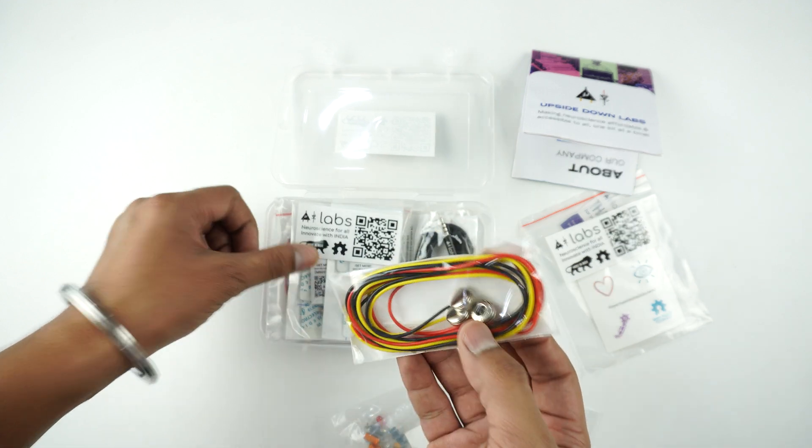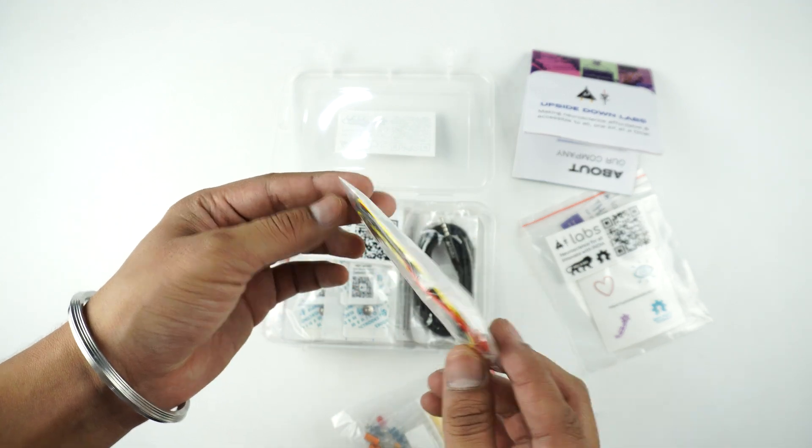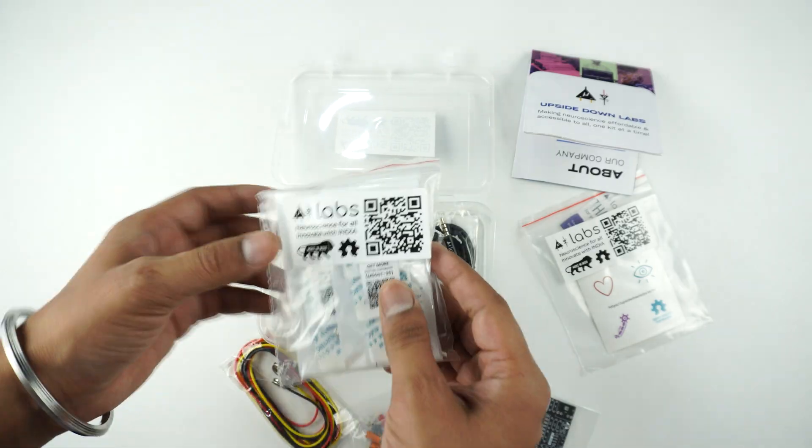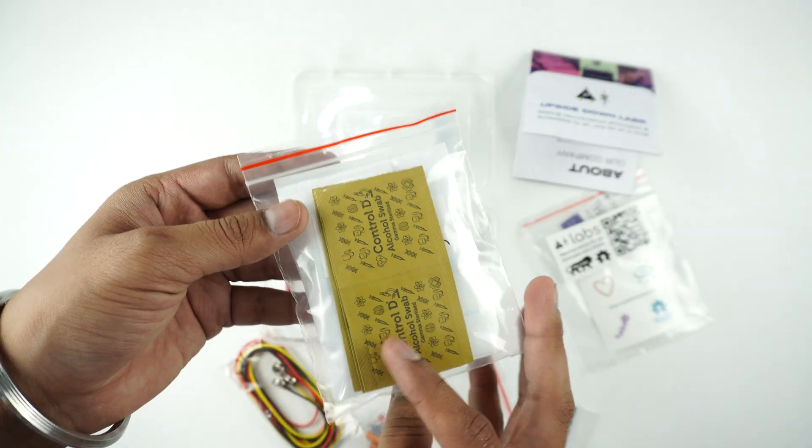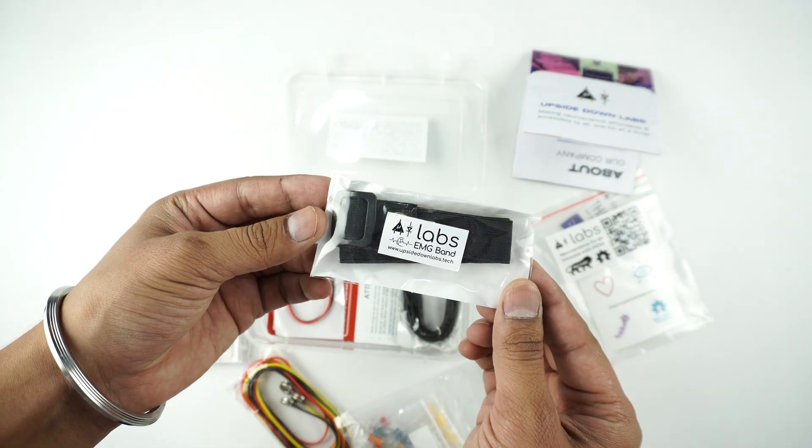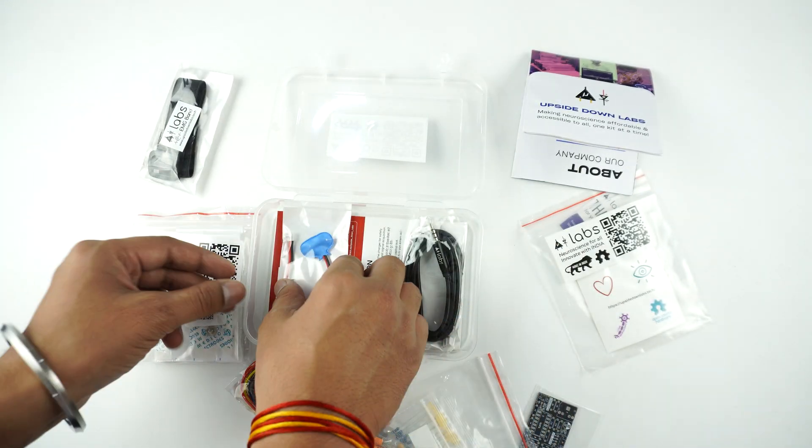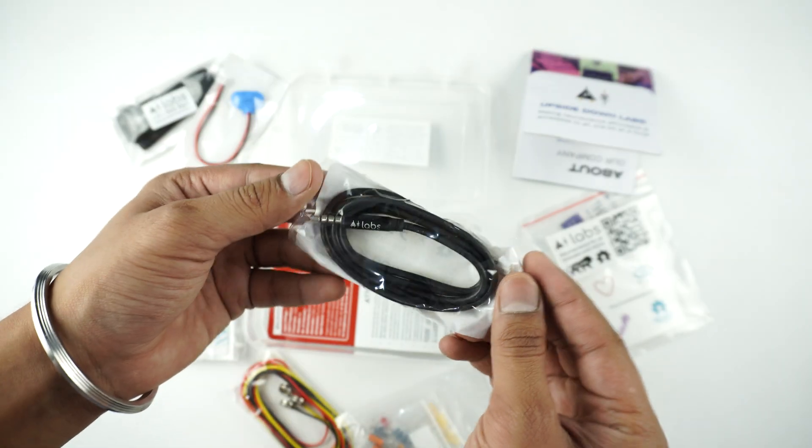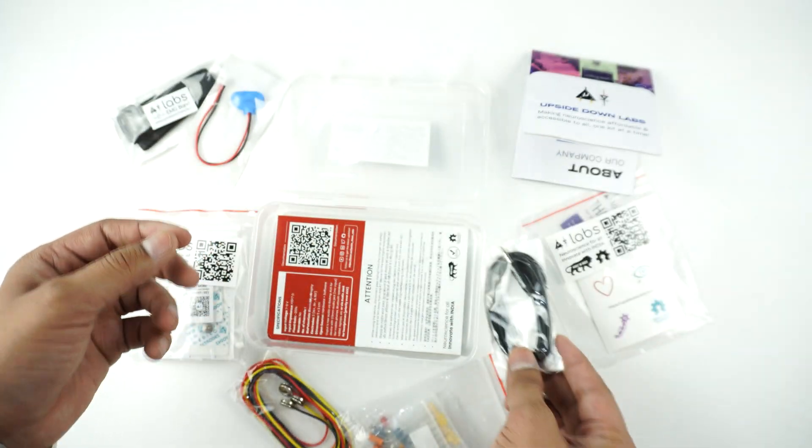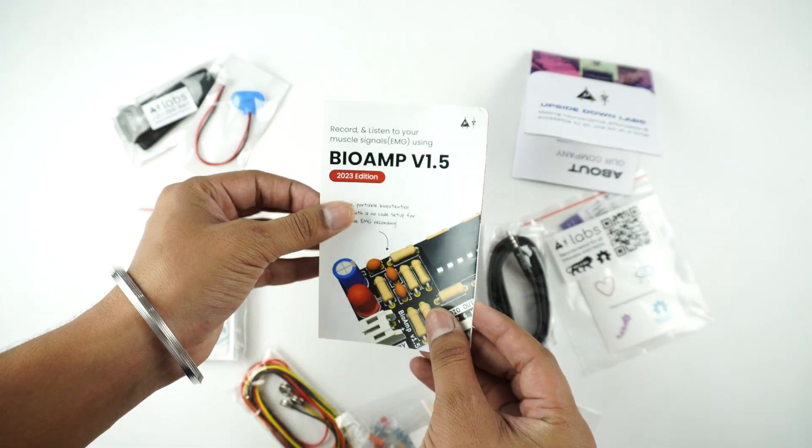It also includes a BioAmp cable V3 of 100 centimeter length, 15 pieces of gel electrodes, a muscle BioAmp band or an EMG band, a 9 volt snap cable, a BioAmp aux cable, and a guide. This guide will get you started on how to use the kit.